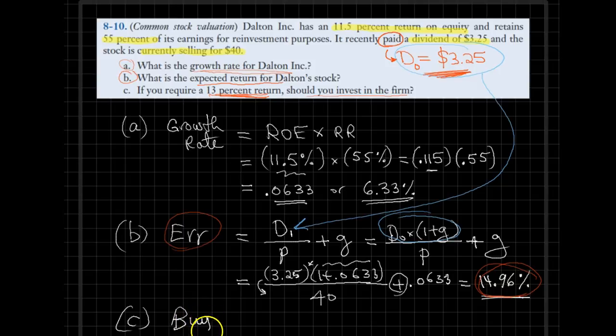Buy, because expected rate of return exceeds the required rate of return. That completes our solution, and we are done.